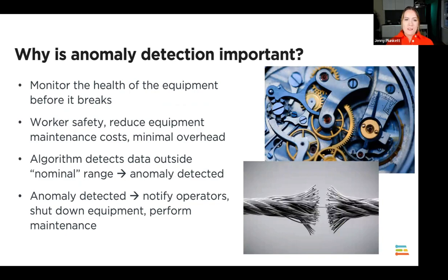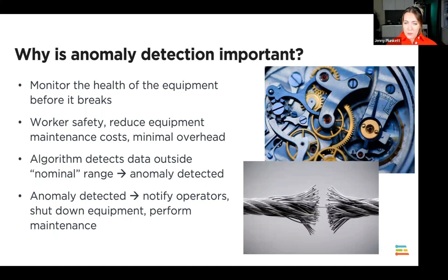Anomaly detection is important because we want to monitor the health of equipment before it breaks. This can reduce accidents on a factory floor — if a machine is about to break, we can turn it off remotely on the edge without ever having to alert anyone. Alternatively, we can detect the anomaly and alert workers to come and perform maintenance. An algorithm detects data that is outside the nominal range coming from sensors on the equipment, and we can act on that inference directly on the device.